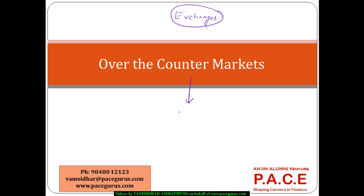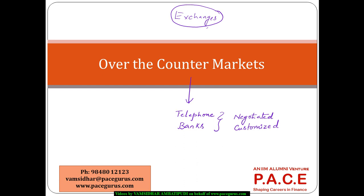The trades are generally done over the telephone between the various participants, and the majority of participants in over-the-counter market transactions are banks. The buying and selling deals are negotiated between both the buyer and the seller, so they are more customized — not standardized kind of deals. They are executed over the telephone itself, so there is no intermediary, no central marketplace, and no standardization of products in the over-the-counter market.